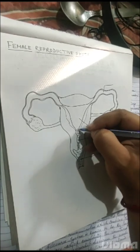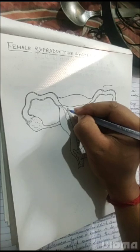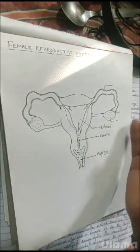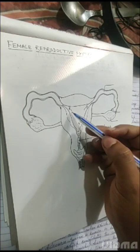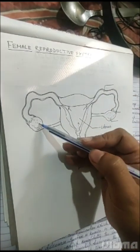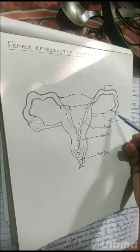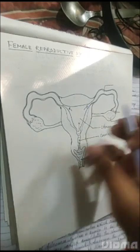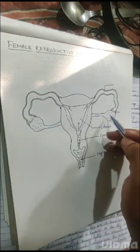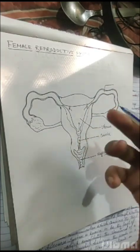The sperm moves here and then to either this side or this side from the uterus. In one month, if this ovary is fertilized, the other month the other one will be fertilized — it's an alternating process. Fertilization occurs in both ovaries alternately: first month this one, second month that one, and so on.